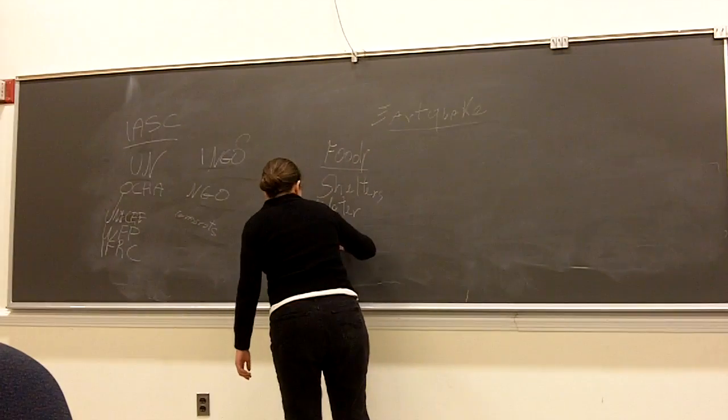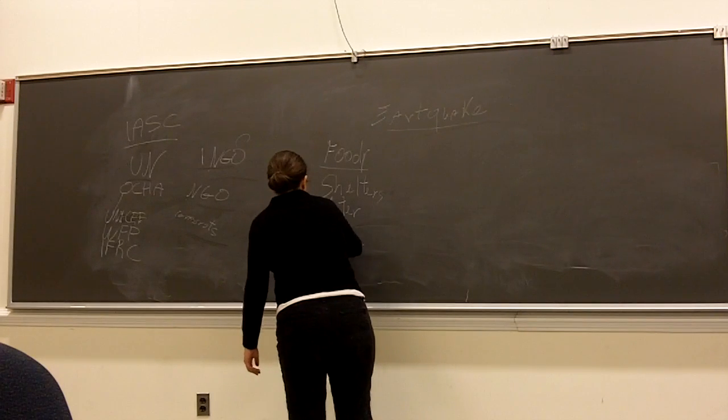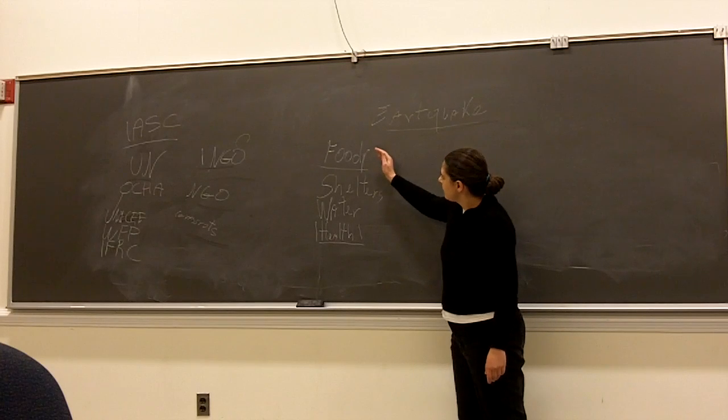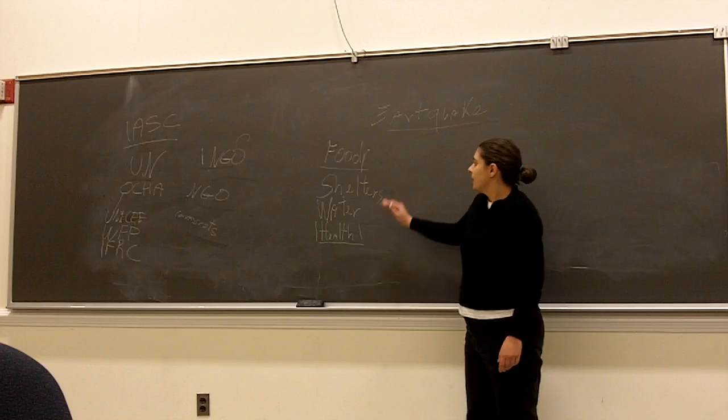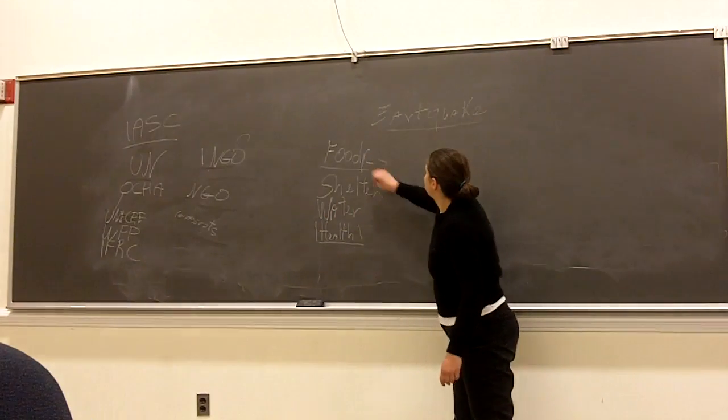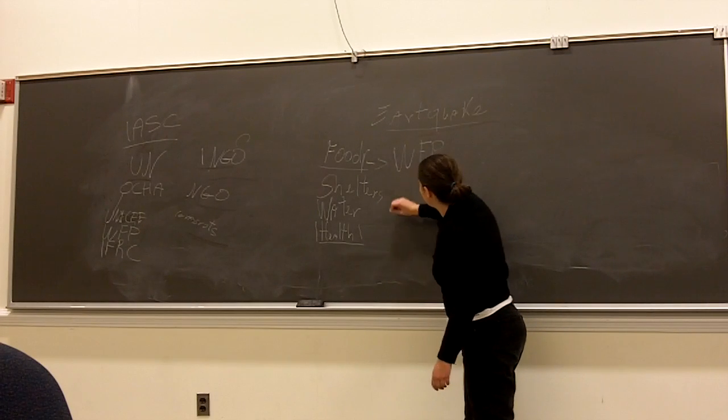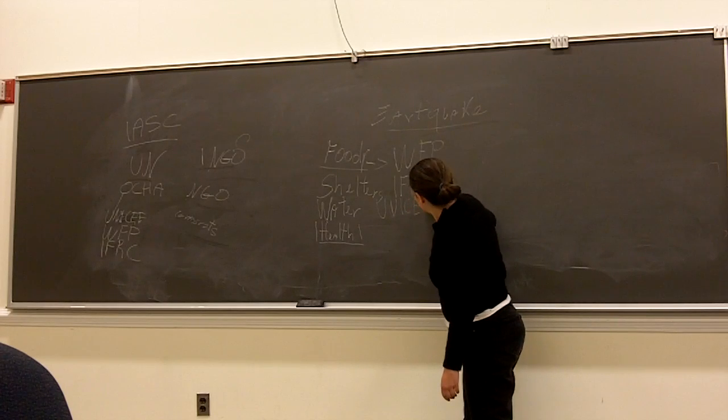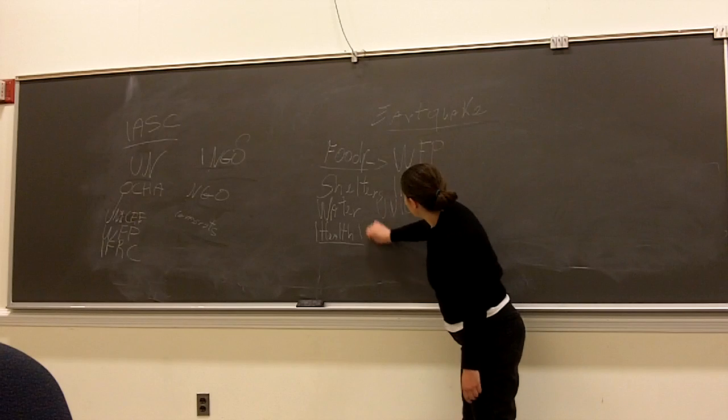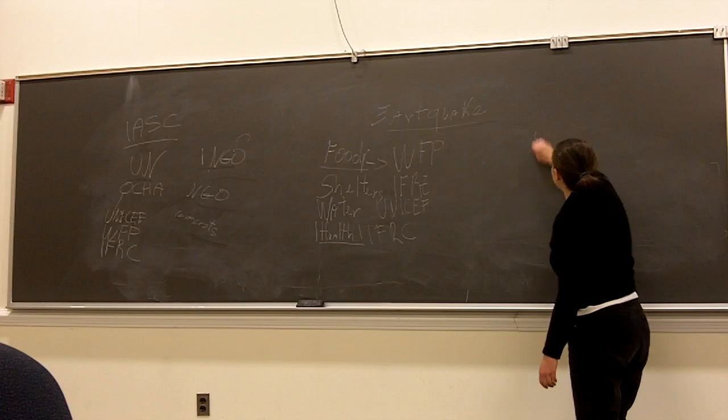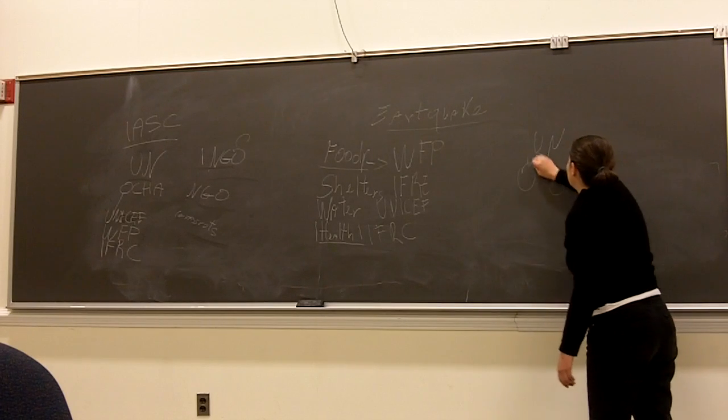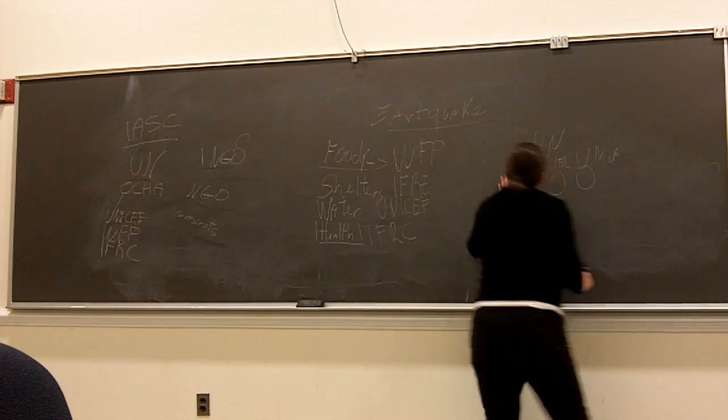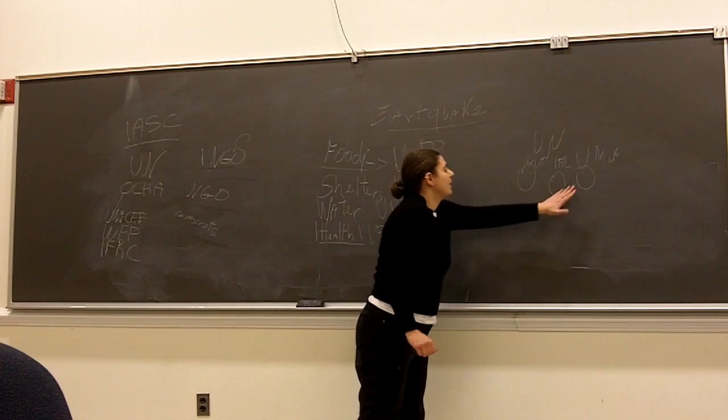All right. So all of these things, all of these elements, like food, shelter, water, and health, they are filled with one of the UN agencies. So, like for food, we have WFP. Right? Shelter, usually it's the IFRC, the International Federation of Red Cross. Water is UNICEF. And also health is sometimes paired with IFRC. All right? So what happens is that we have UN, and then we have all these agencies. WFP, IFRC, and UNICEF, just to make an example. And each of these represent one of these elements, so one of the main needs of the population.